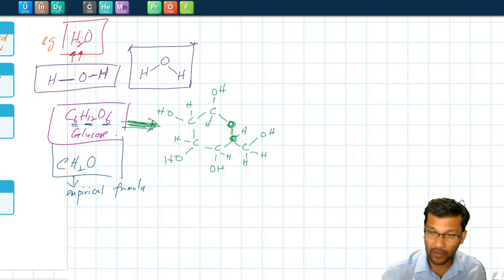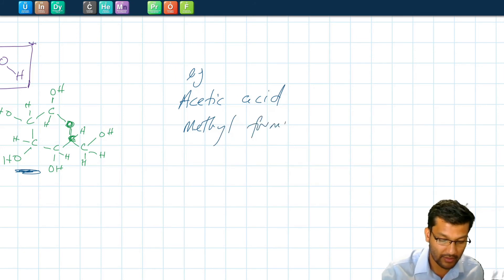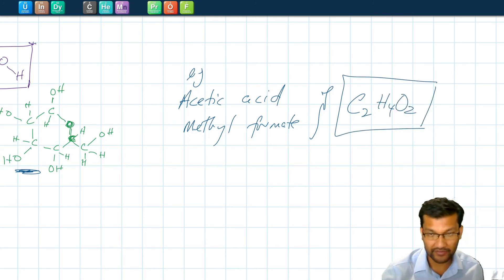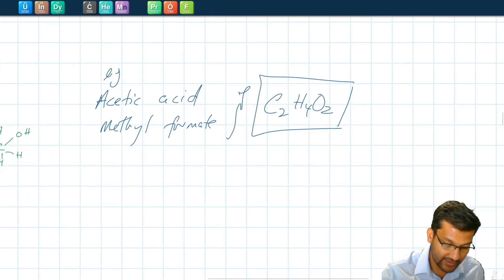Note that there could be multiple molecules with the same molecular formula even though their structural formula will be different. For example, both acetic acid and methyl formate, their molecular formulas are C2H4O2, but they have different structures because they're different molecules. These are called isomers.